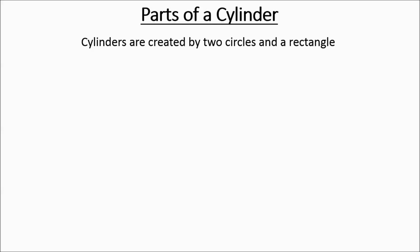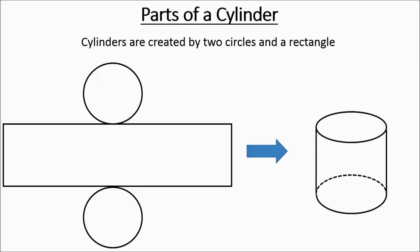A cylinder is created by two circles and a rectangle. So here's a circle, here's a circle, here's a rectangle. If you had these on a piece of paper and cut them out and folded them up, it would create a cylinder.